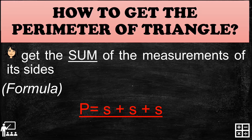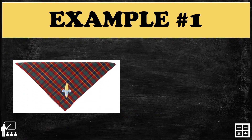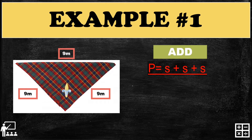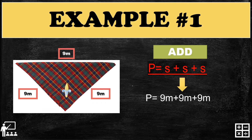Let's try an example. I have here a necker chip which has sides of 9 meters, 9 meters, and 9 meters. Using the formula, P equals S plus S plus S, substitute the sides: 9 meters plus 9 meters plus 9 meters. Nine plus nine plus nine gives you 27 meters, so the perimeter of this necker chip is 27 meters.